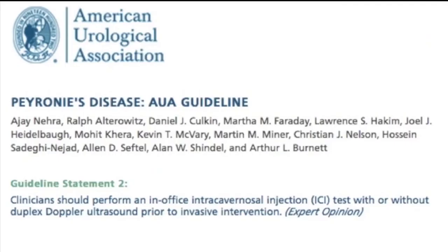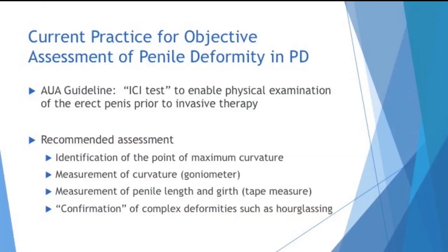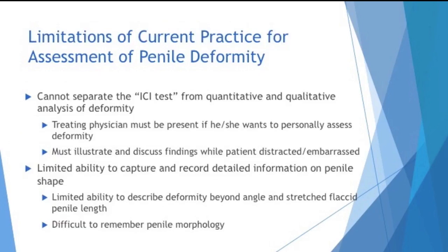The current AUA guideline for the assessment of patients with Peyronie's disease establishes the in-office intracavernosal injection test as a critical part of the diagnostic assessment that should be performed prior to any invasive intervention. One or more doses of vasoactive medication are delivered into the corpora cavernosa until a maximally rigid erection is achieved. This test enables the physician to evaluate erectile function and assess penile shape, including measurement of angle of curvature, penile length, and penile circumference.